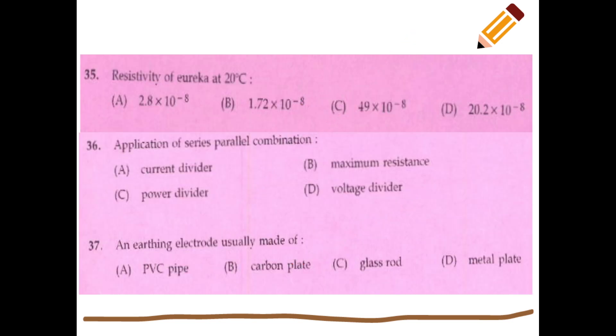The resistivity of Eureka at 20 degrees Celsius is 49 × 10⁻⁸ ohm-meter. An application of series-parallel combination is a power divider.